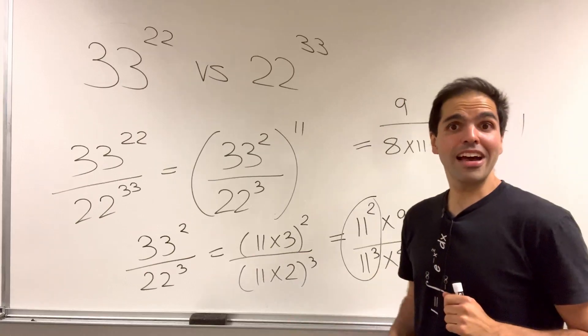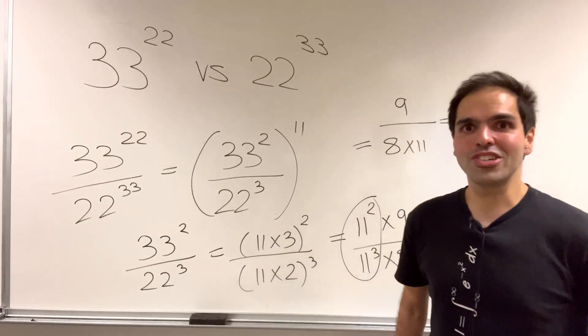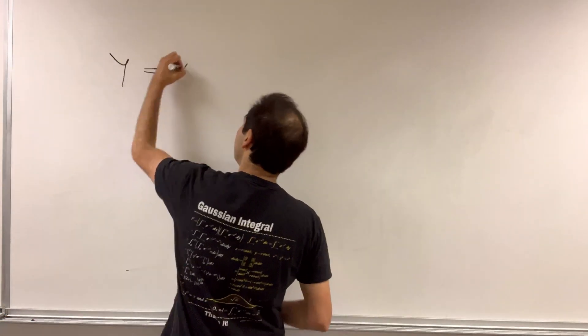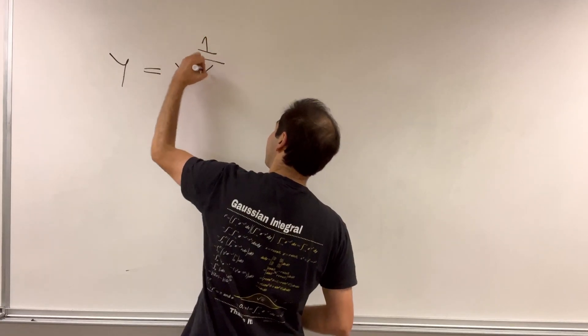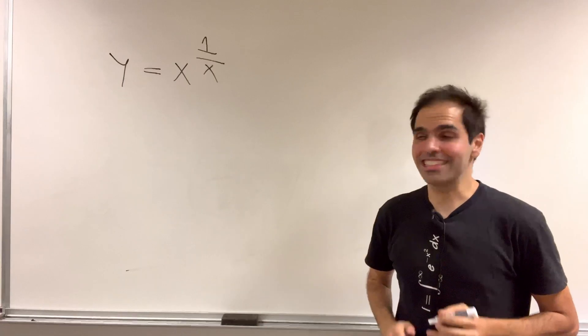Now, there's actually a better way of doing it using calculus, which I want to show you. Let's look at the function y equals x to the 1 over x and figure out where it attains its maximum.